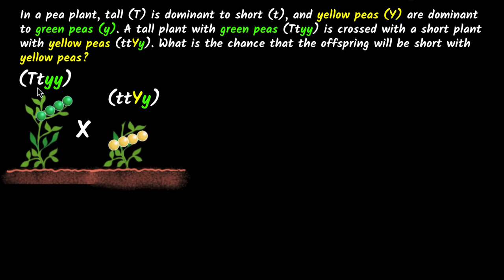Let's start by writing that down. This is a tall plant — why is it tall? Because even though it has both these alleles, tall is dominant and therefore it appears tall. Why is it green? Because it has both recessive green color alleles, therefore it is green. On the other hand, this one — why is it short? Because it has both recessive short alleles. And why is it yellow? Because it has one yellow dominant allele, and therefore it is yellow. It all makes sense.